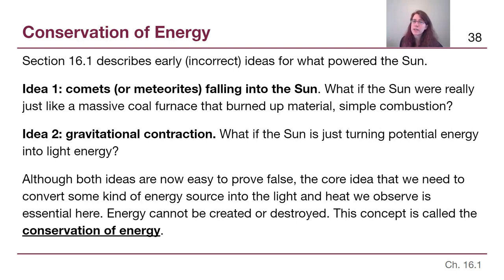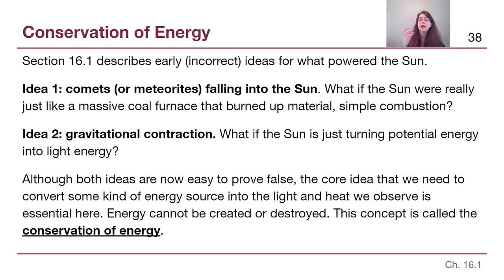Although these ideas are wrong, they show us that no matter what we try to come up with, we need something to be the original type of energy. In idea one it's mass that we're going to burn; in idea two it's gravitational potential energy — an initial type of energy that we just turn into heat and light. This concept of energy not being created or destroyed, just changed, is called the conservation of energy, and it is something we have to keep in mind throughout this chapter.